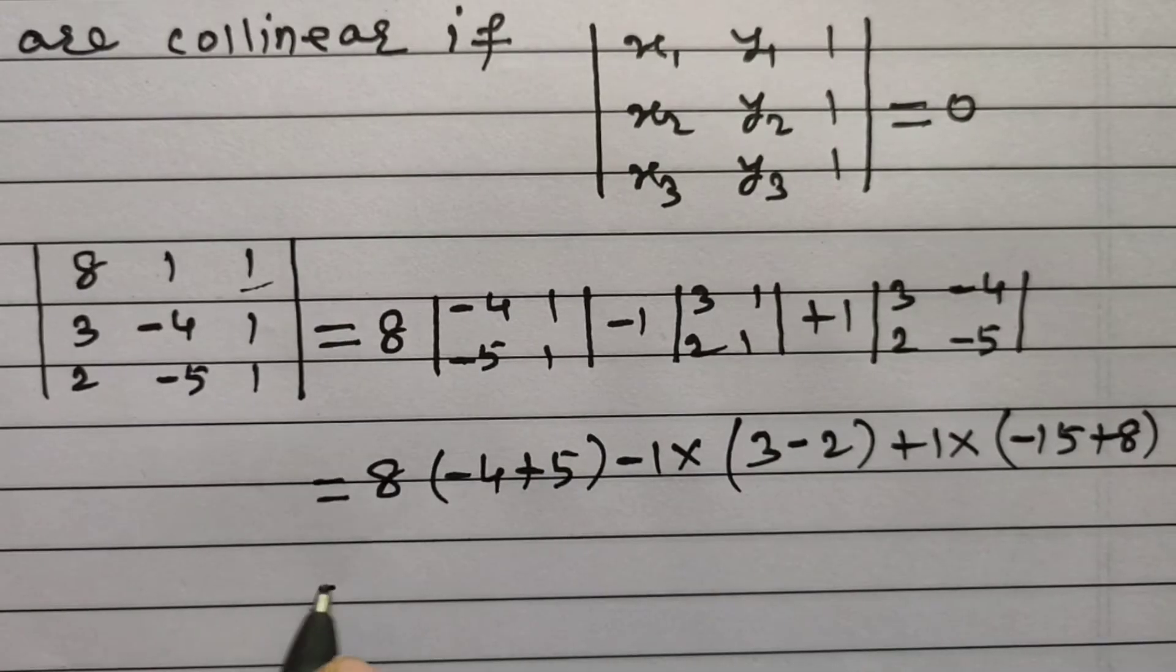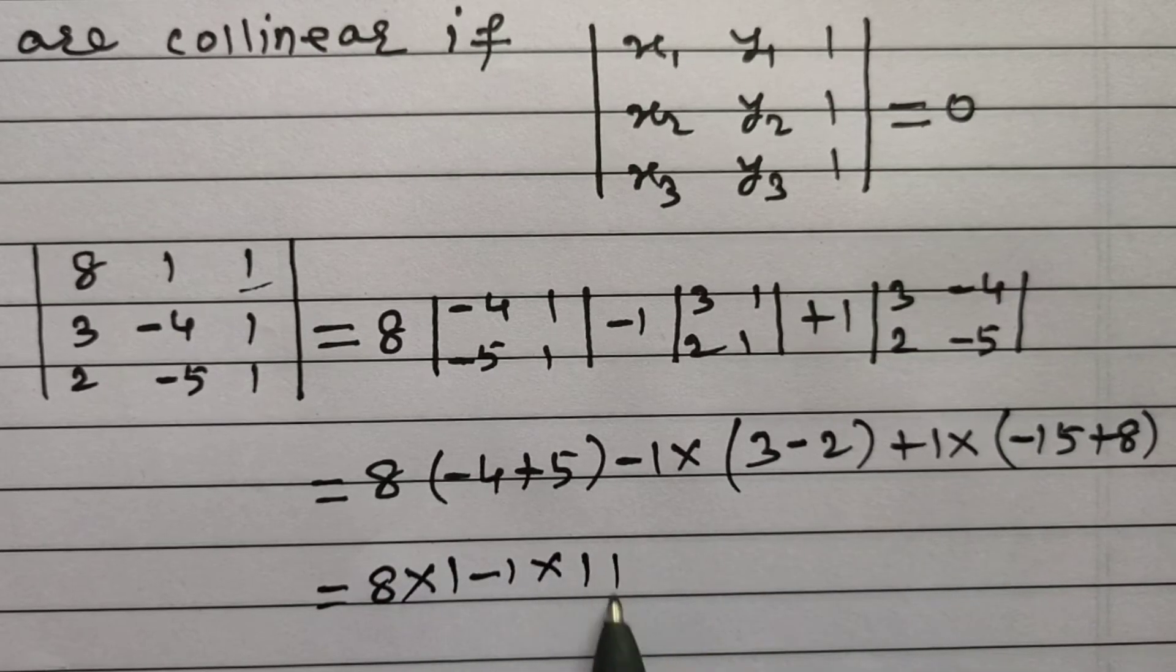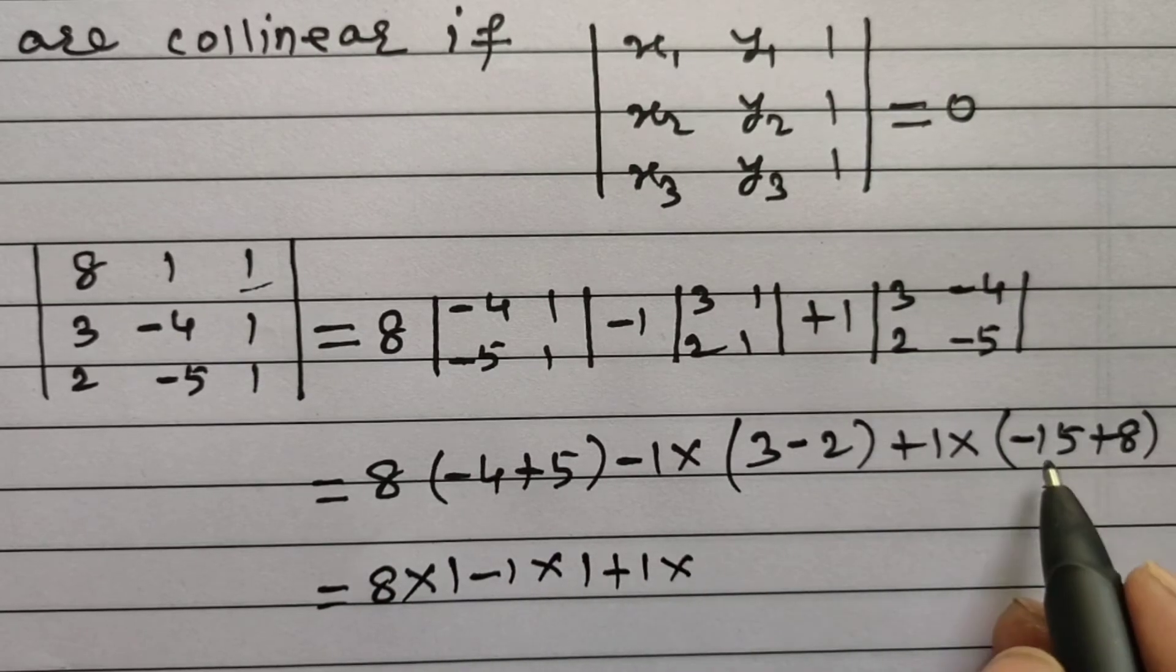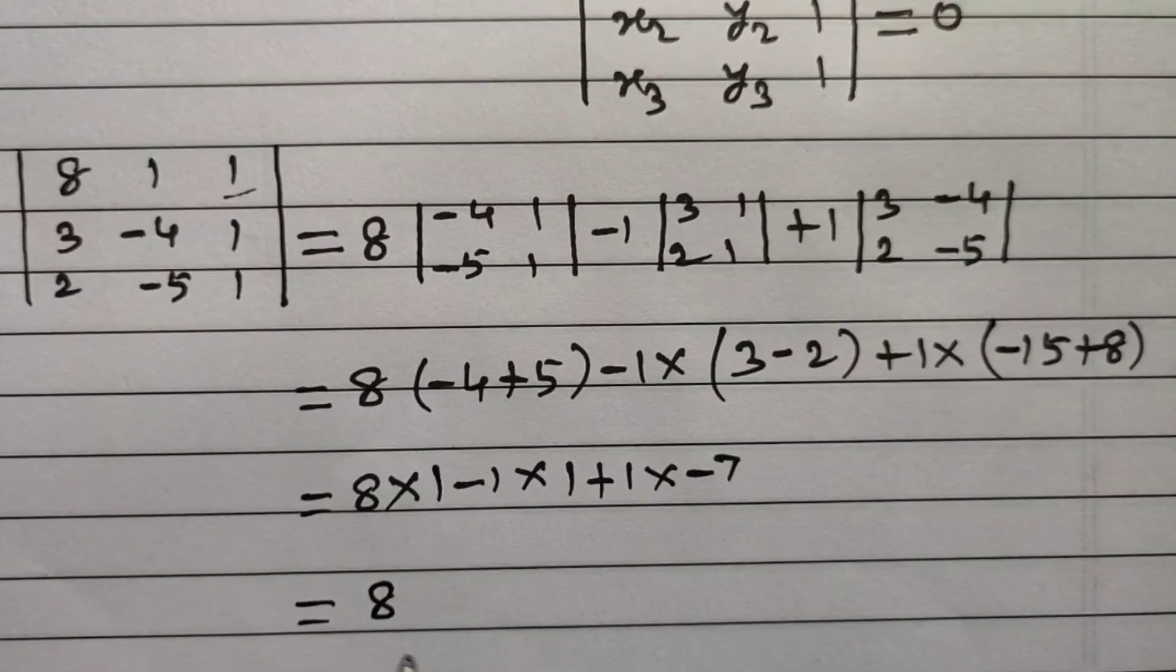Simplify this, which is equal to 8 into 1, minus 1 into 1, plus 1 into -7, which is equal to 8 minus 1 minus 7.